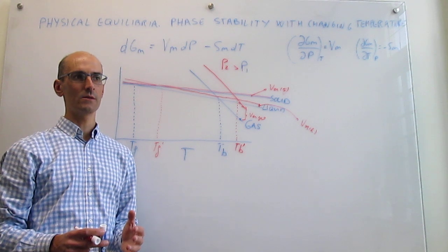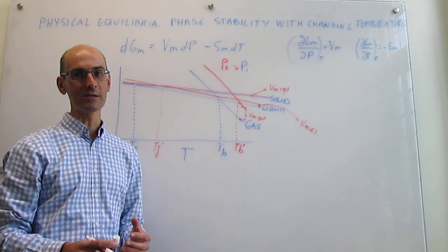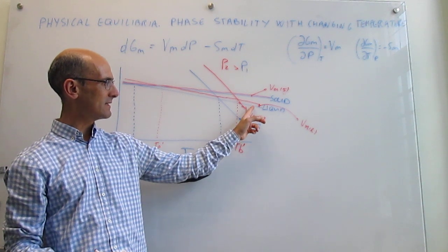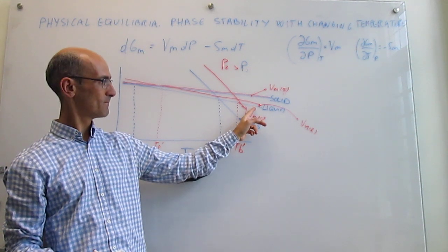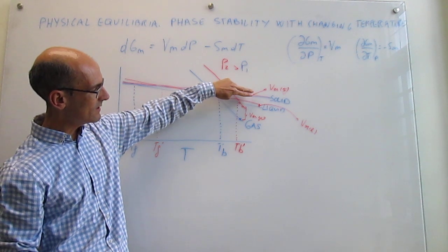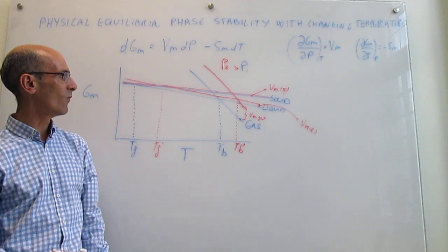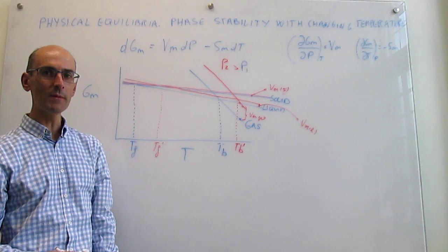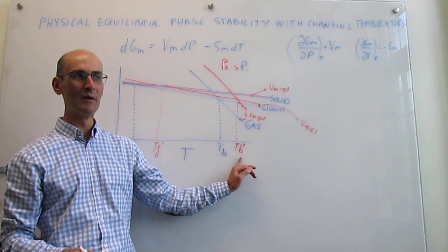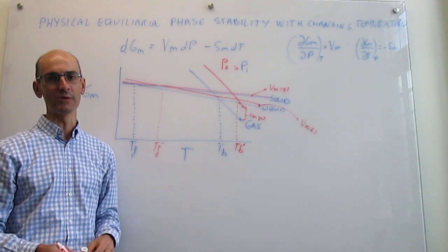I encourage you to figure out on your own how this graph would differ for water and those substances in which the molar volume of the solid is actually greater than the molar volume of the liquid. Here is a hint: the only thing that changes is that the offset of the red line from the blue line for the liquid will be smaller than the offset of the red line from the blue line for the solid — exactly the opposite of what we have here. For water, the gap for the liquid is smaller than for the solid, which means that if you increase pressure, the boiling point will go up, but the freezing point will go down. That is what happens for water, which is anomalous with respect to most other substances.